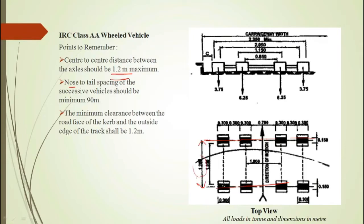In the direction of motion of the vehicle, the nose-to-tail spacing between successive vehicles should be minimum 90 meter. Here also the value of C should be minimum 1.2 meter.